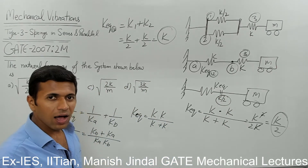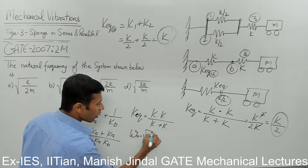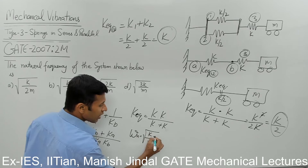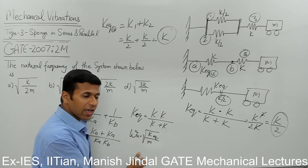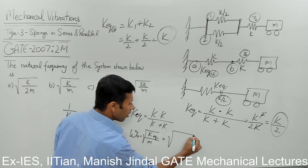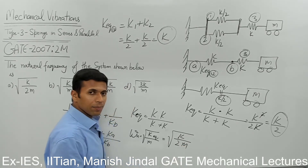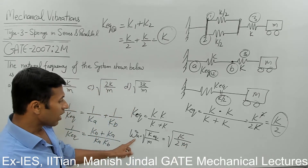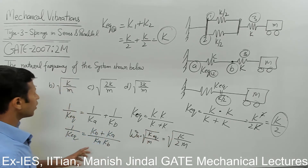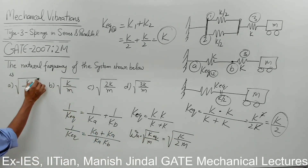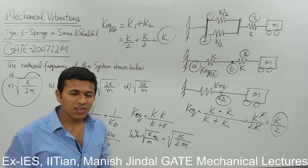So now we need to find omega — the natural frequency. The formula for natural frequency is the square root of k by m, i.e., square root of equivalent stiffness divided by m. Putting in the value: omega natural equals square root of (k/2) divided by m, which gives square root of k divided by 2m. So the answer is square root of k over 2m. That's how we solve this simple problem.